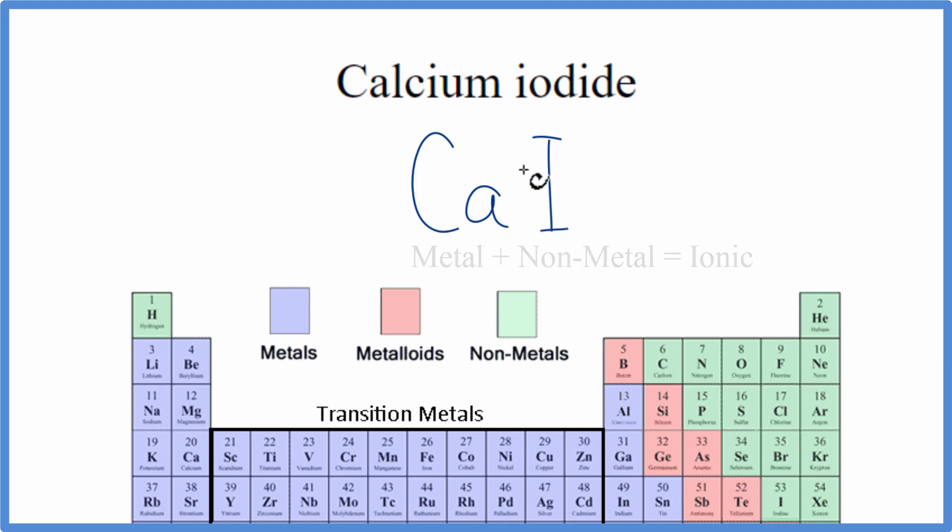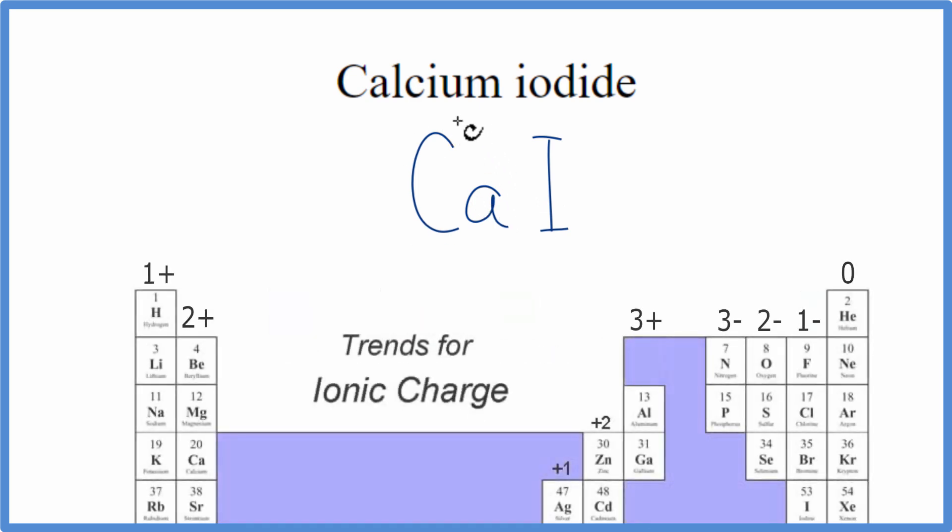So back to the periodic table, calcium has a 2 plus ionic charge. Iodine has a 1 minus charge. So these charges, they need to add up to 0. In this case, they don't.